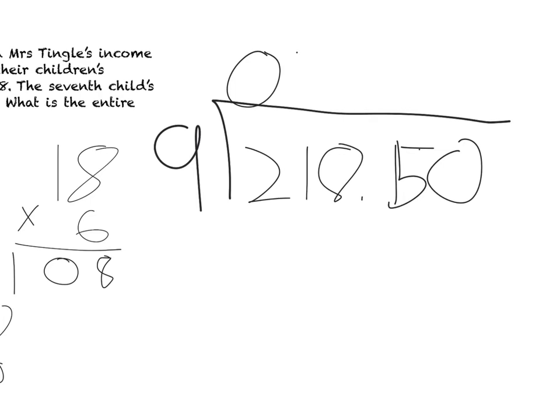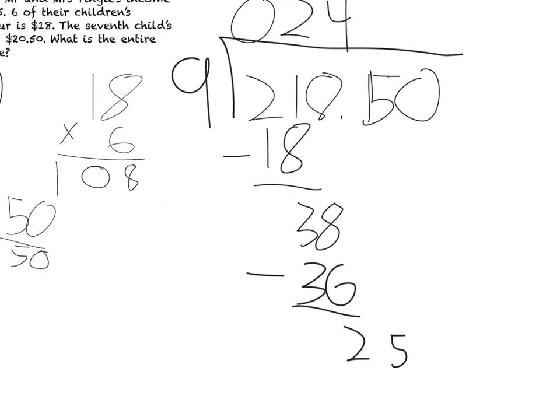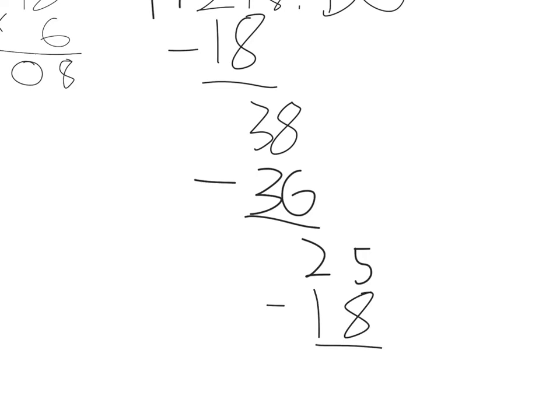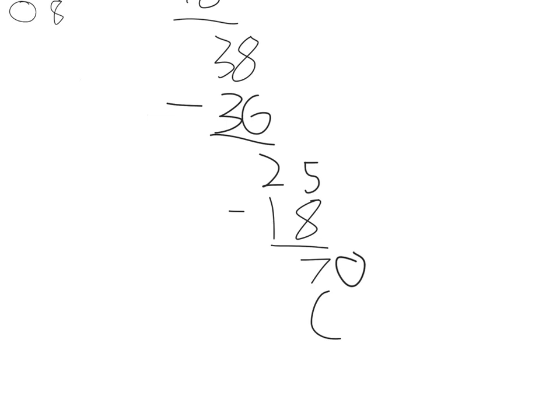Okay. So nine goes into two zero times. Nine goes into 21 twice, which makes 18. Minus equals three. 38 goes into four times to get you to 36. Minus equals 25. It goes in two times, which gets you to 18. Minus equals seven. 70 gets you to 63, which is seven times.